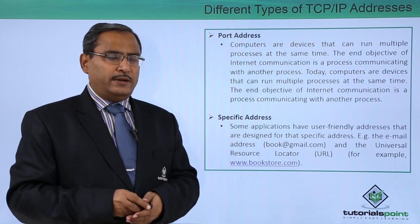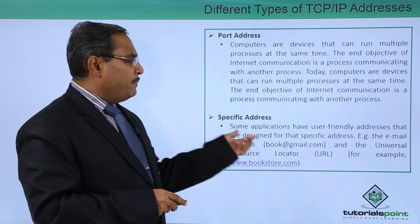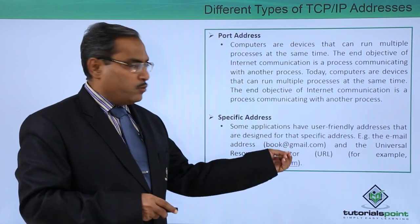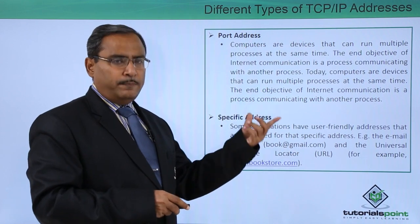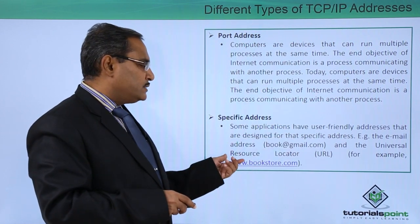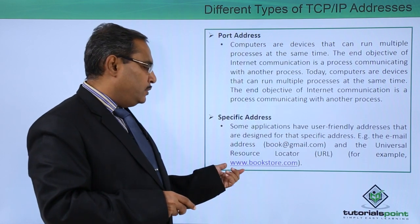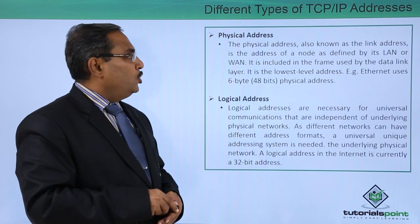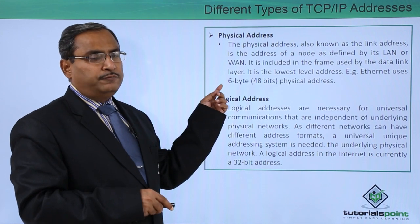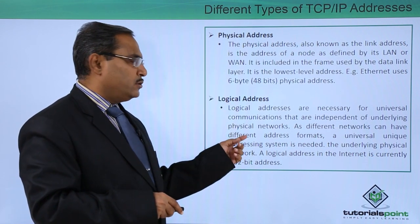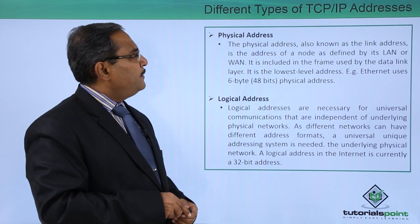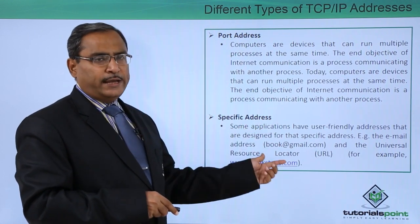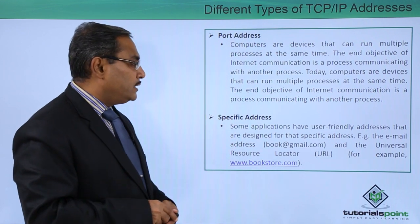Coming to the specific address, this is an address we usually use in our daily life. Some applications have user-friendly addresses designed for specific use — for example, an email address like yourbook@gmail.com, or a Universal Resource Locator (URL) such as www.bookstore.com. These can be considered as specific addresses. So we have: physical address (Ethernet, 48 bits), logical address (32 bits), port address for process communication, and specific address like email or URL.